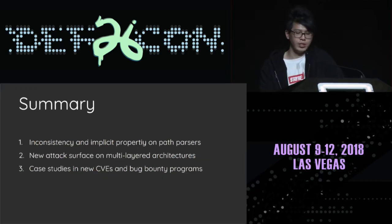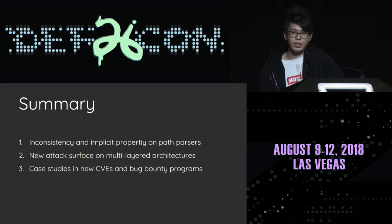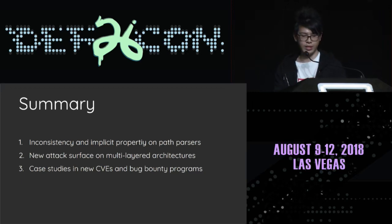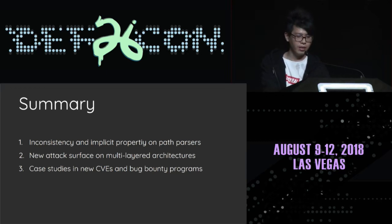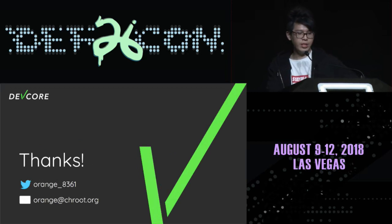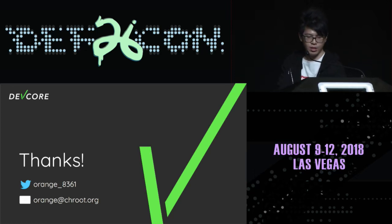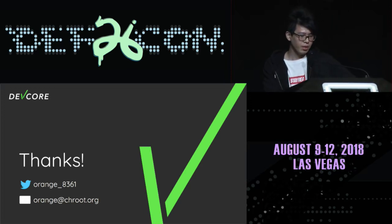Summary: In this talk, we first showed the blind spots in path processing and path normalization, including inconsistency, method misuse, and the off-by-slash problem in Nginx. Then we introduced a new attack surface on the reverse proxy architecture that can bypass access control and escape from context mapping. Finally, we showed several case studies on not only open-source applications but also bug bounty programs. Here is my contact information — please let me know if you have any further questions or new findings. We will release the whole story of our case studies on my blog, and you can follow my Twitter for the latest posts. This is the end of my presentation. Thank you for being here.